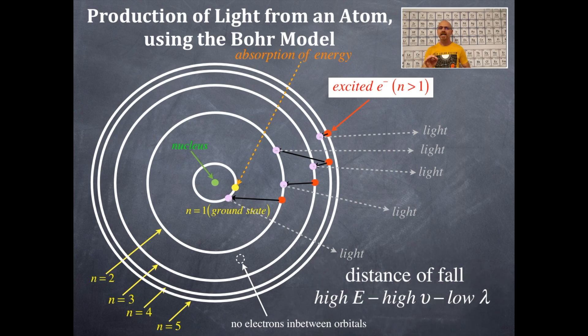And the concept is high energy, high frequency, low wavelength. So, see that high E is for high energy. High, that's the Greek letter nu, which looks like a V, but it's scripted. That's high frequency. And low, that's a lambda, Greek letter lambda, and that low wavelength.